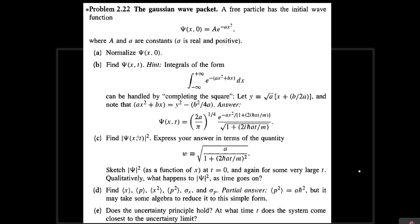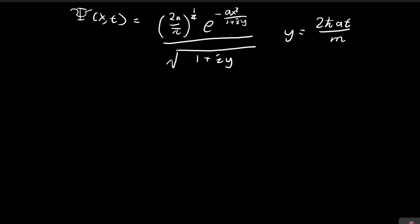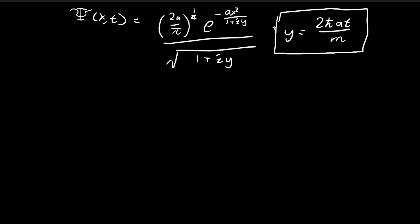We would like to find the absolute value of the wave function squared. From the last video, we found that the wave function is equal to a specific term. Using shorthand, I'm going to define a variable y, just to save time from having to write out all these constants.